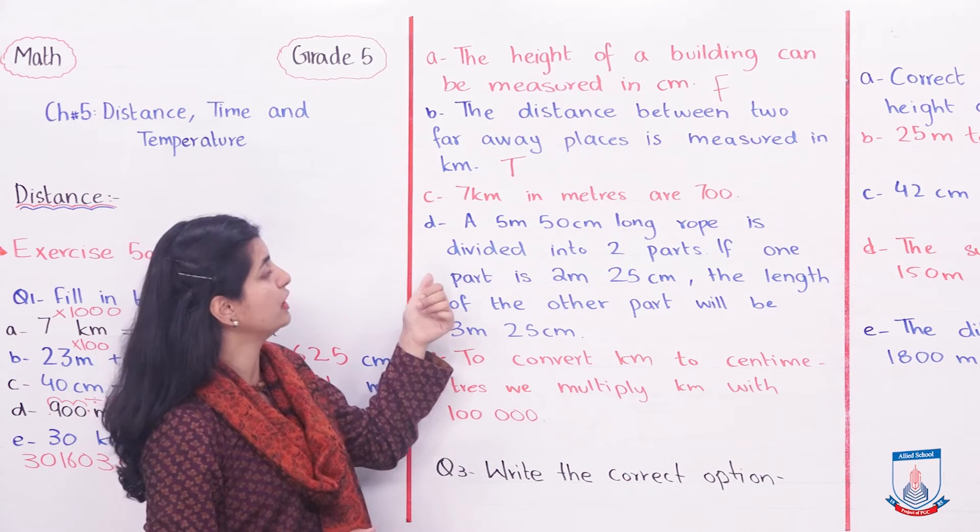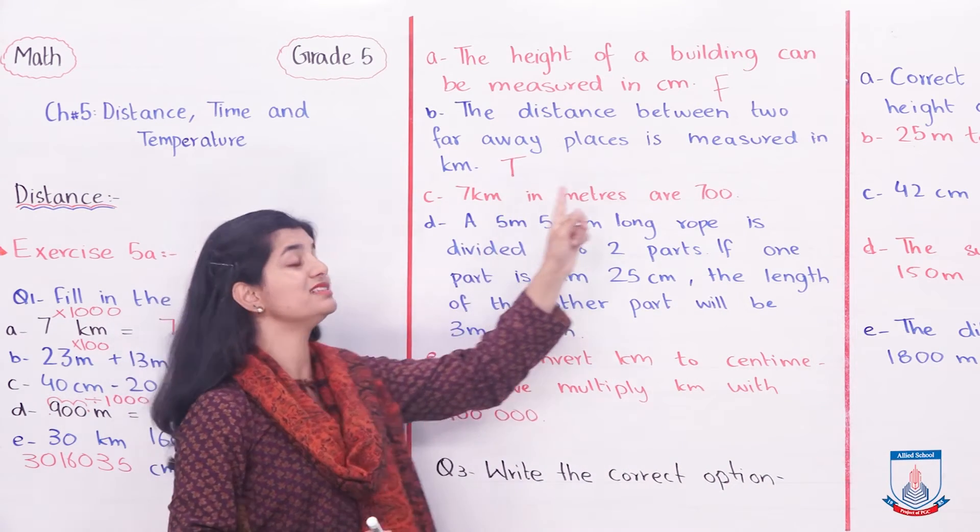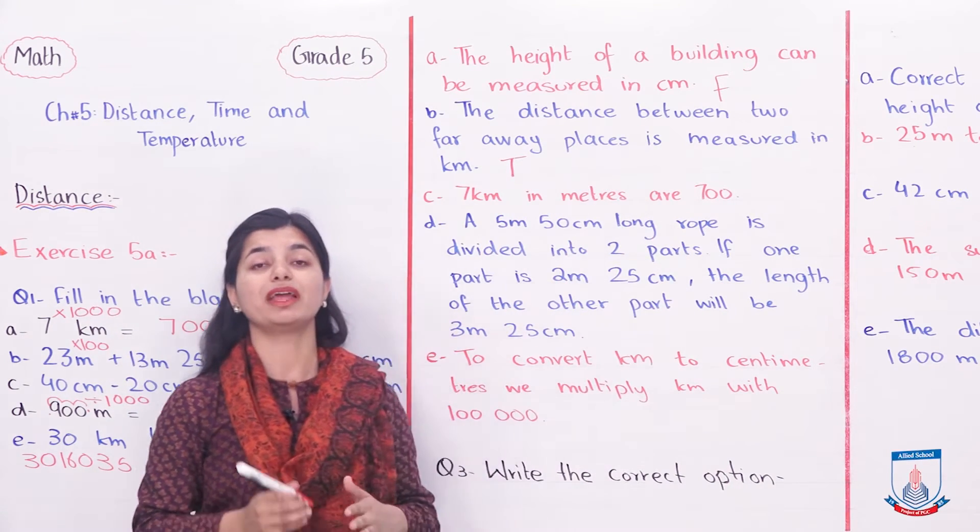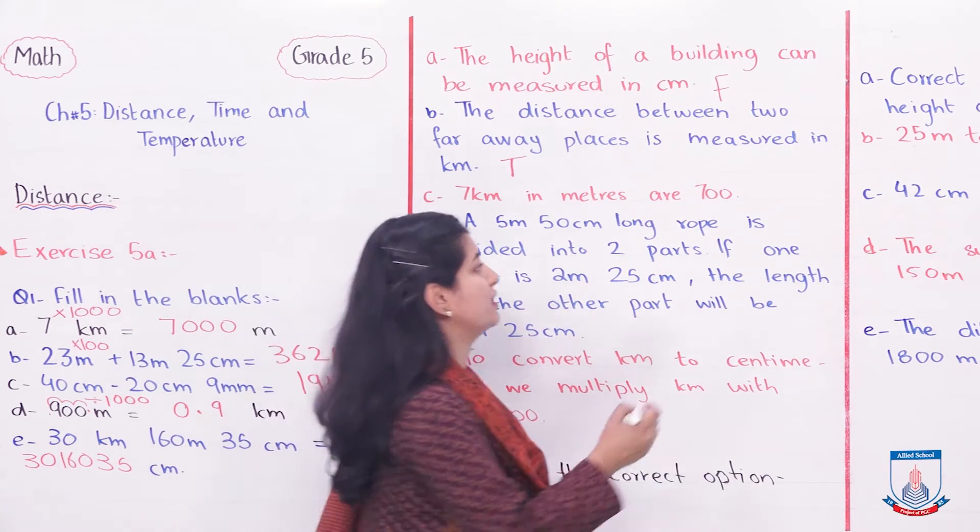Part C: Seven kilometers and meters are 700 meters. There's a thousand difference when you multiply. So 7 into thousand should be 7000, not 700. This is false.